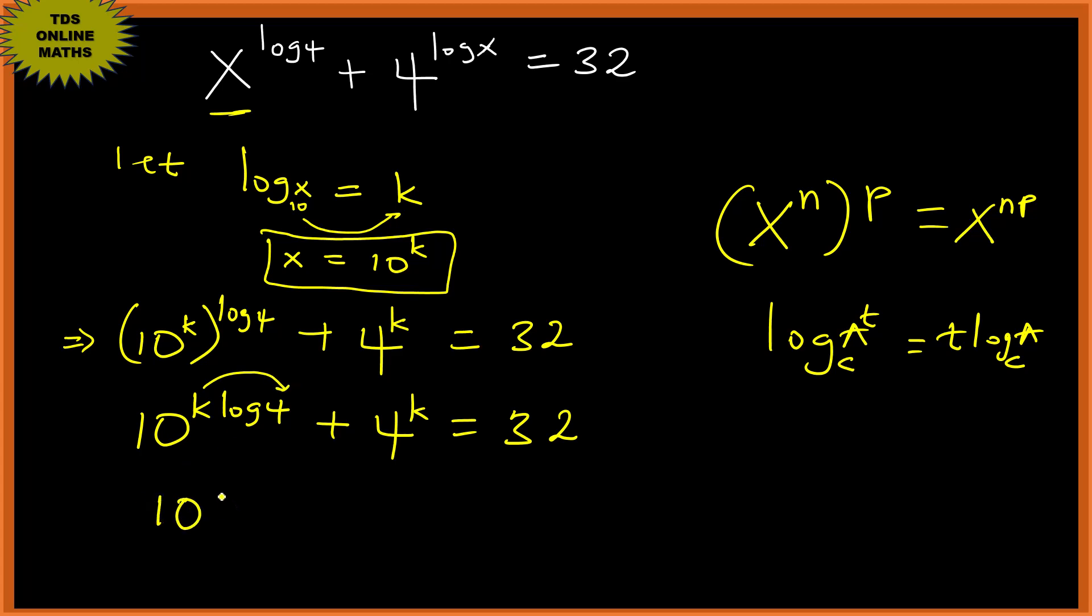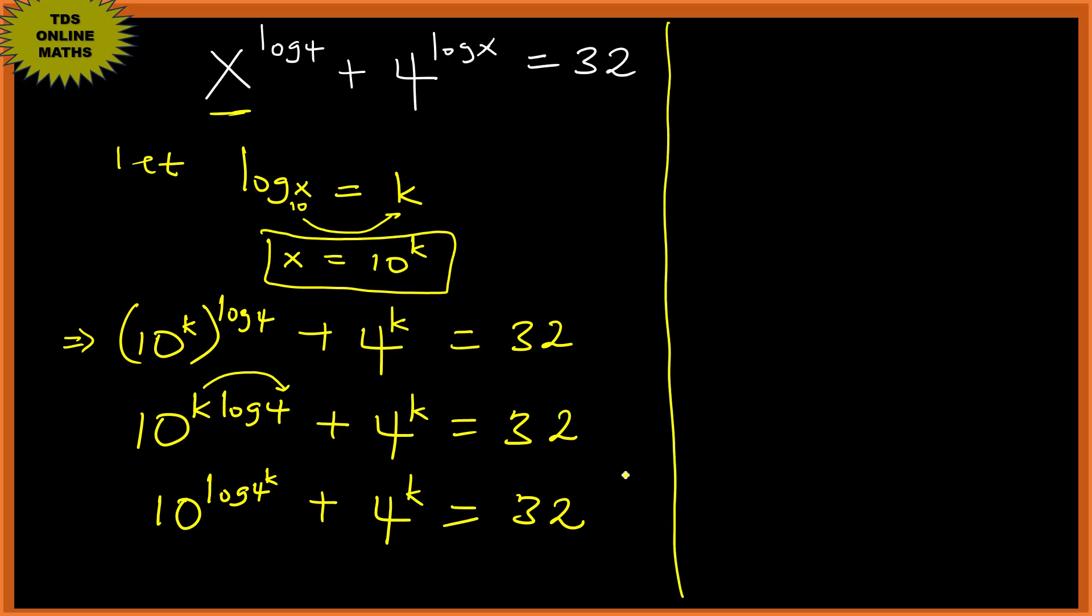Now let's recall this property. We said if we don't see the base, the base is 10. So we have 10 raised to log something to base 10, so 10 here, 10 there. So this side is 4 raised to k. So 4 raised to k plus 4 raised to k equals 32.